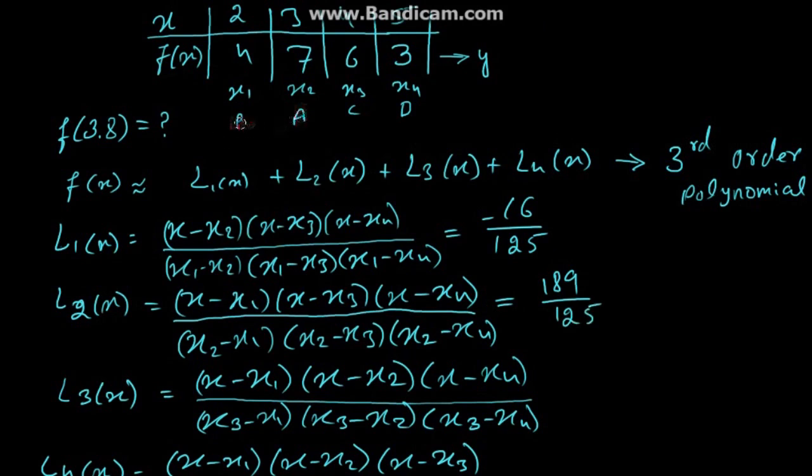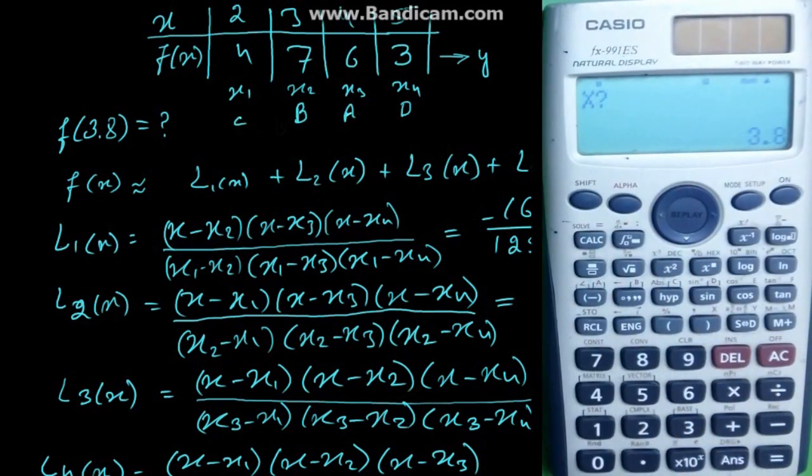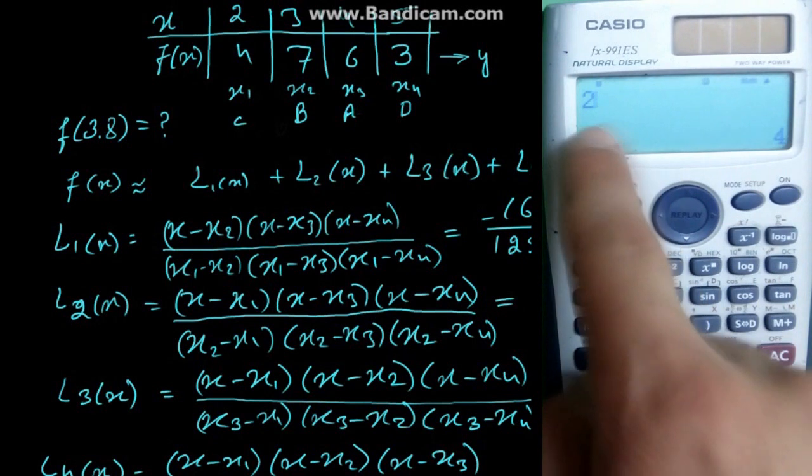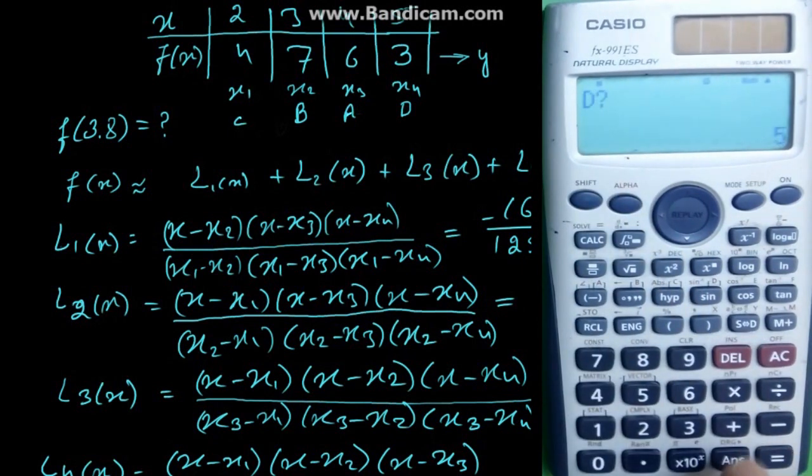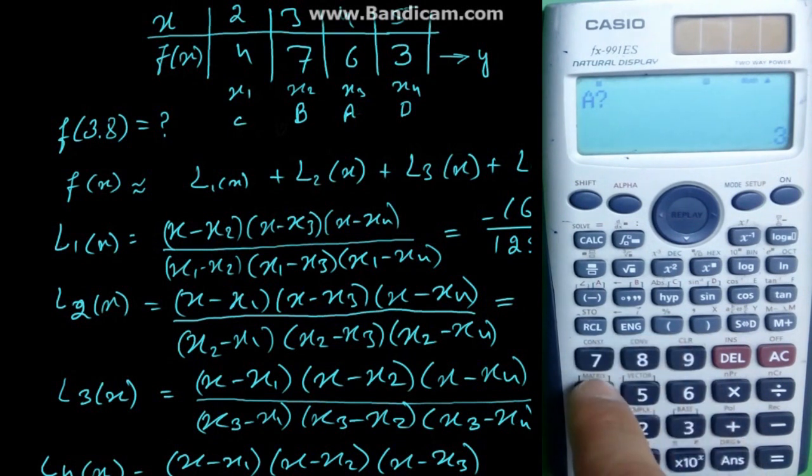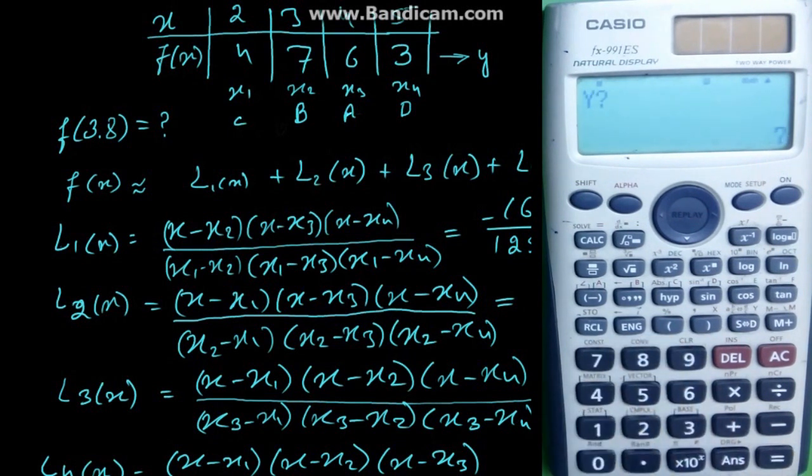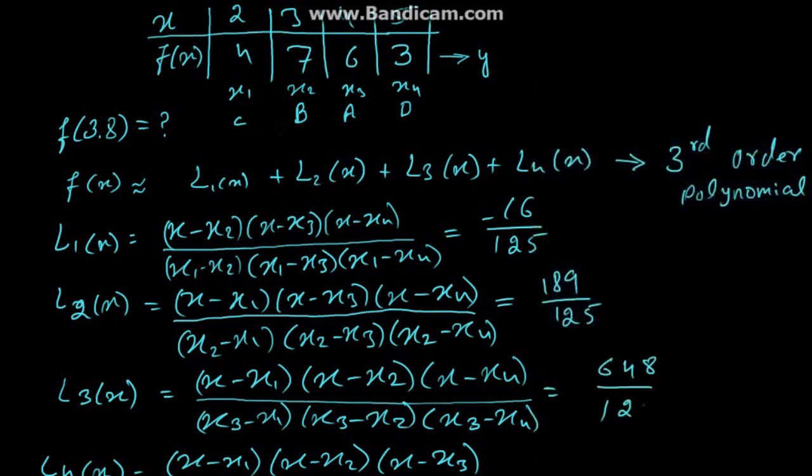Now to find L3 of x, exchange a with c. This time enter 3.8 for x, x is the same, b, now here is 3, c is 2, d is 5, while a is 4. Enter y, enter 6. 3.8 for x, this gives 648 divided by 125.